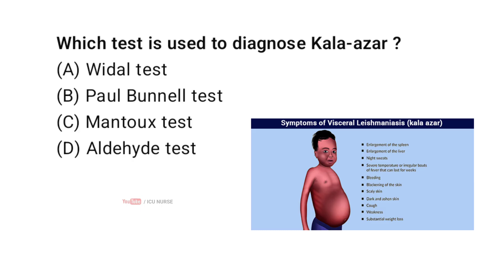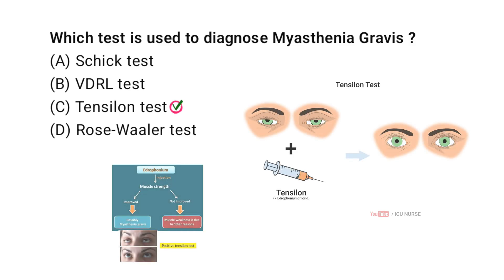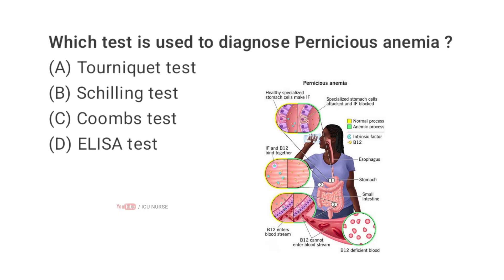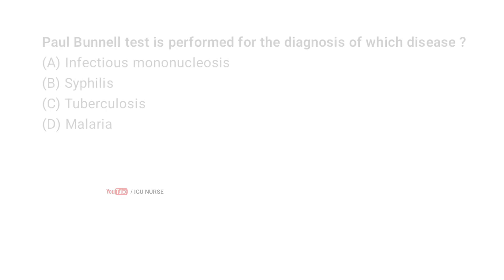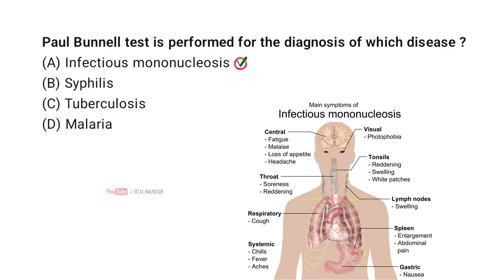Which test is used to diagnose kala azar? Correct answer D: Aldehyde test. Which test is used to diagnose myasthenia gravis? Correct answer C: Tensilon test. Which test is used to diagnose pernicious anemia? Correct answer B: Schilling test. Paul Bunnell test is performed for the diagnosis of which disease? Correct answer A: Infectious mononucleosis.